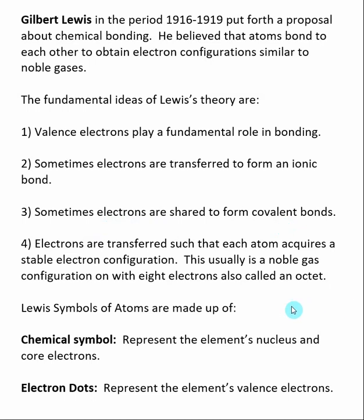In most cases, in order to gain this stable electron configuration, and this is especially true for covalent bonds, they need to have an electron configuration where they have eight electrons around them, and this is called an octet.